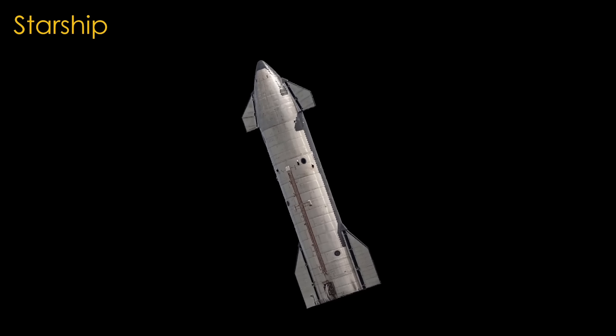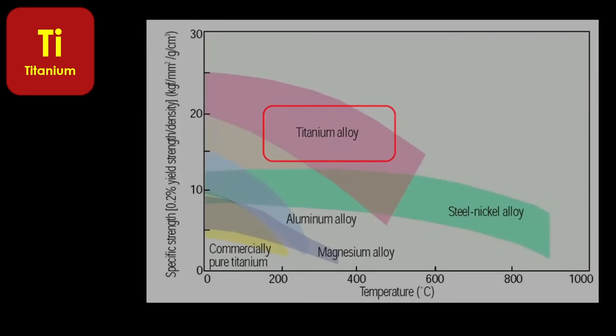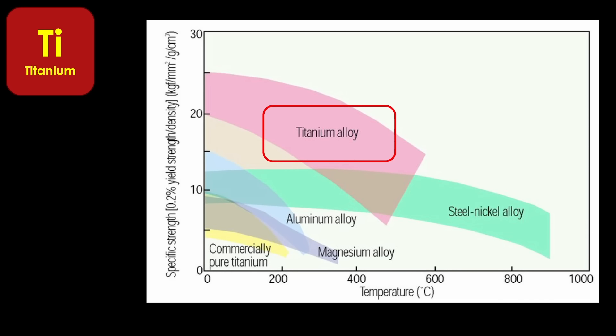We'll start by talking about Starship. Titanium is our first candidate. Titanium is widely reputed to be as strong as steel and 45% lighter, but it loses that advantage at higher temperatures.